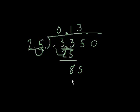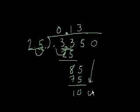3 times 25, we know that's 75. 85 minus 75 is 10. Bring down this 0. And 25 goes into 100 4 times. So our answer is 2.5 goes into 0.3350 0.134 times.